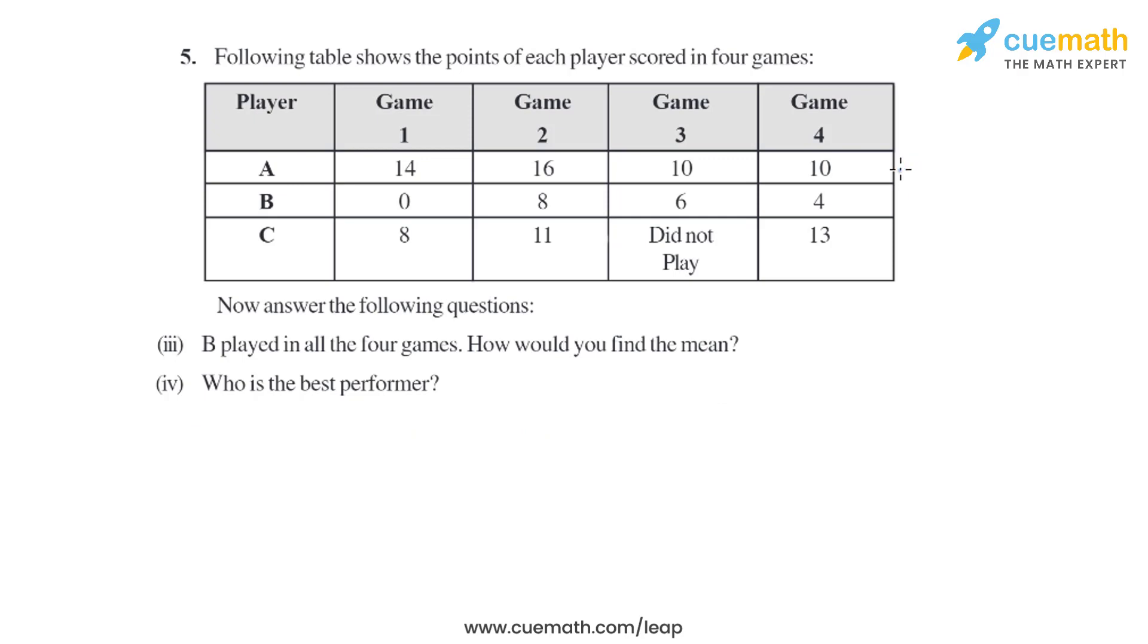Now in the fourth part we have to find who is the best performer. We found out the mean of A is 12.5, the mean of B is 4.5. In the similar way we will find the mean of C, that is 10.66. As we can see, the best performer is A.